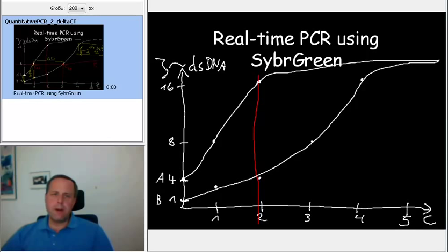If we catch a suitable point, if we catch a suitable cycle where both of them are still in exponential amplification, what we can find is that the intensities of fluorescence that correspond to the amount of double-stranded DNA maintain the original ratio that we had in our original samples A and B, because both of them are doubled with each PCR cycle.